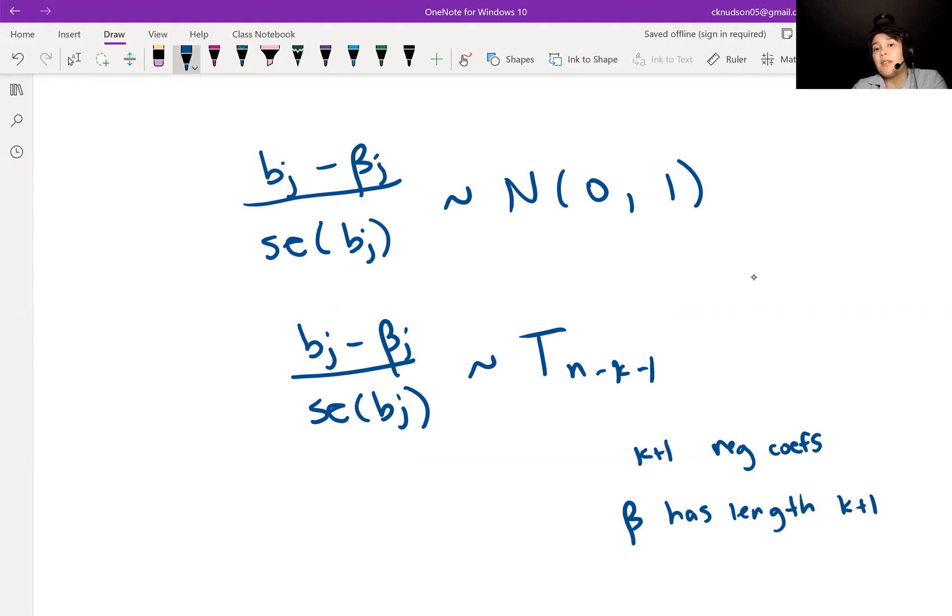We have a sample size of N, so we have N minus K minus one for degrees of freedom.